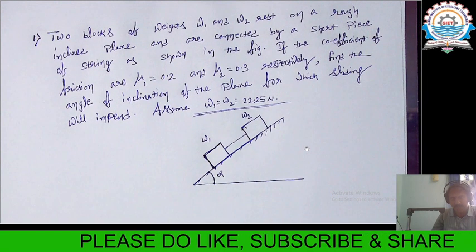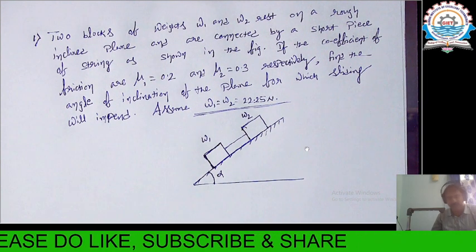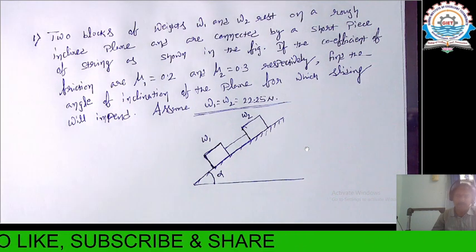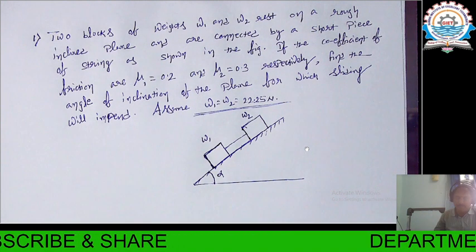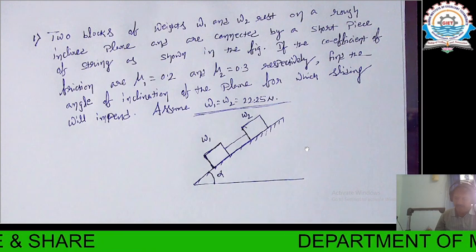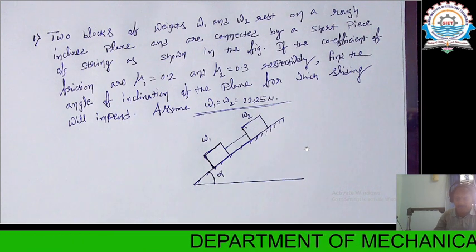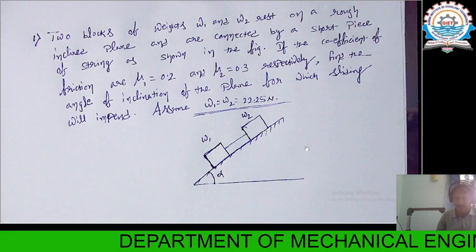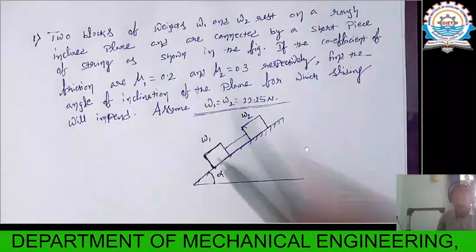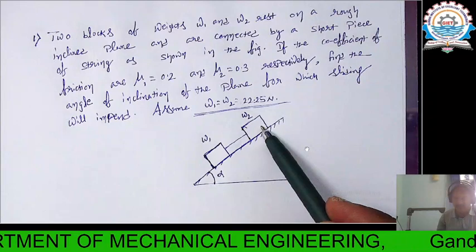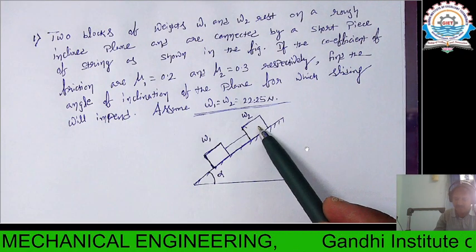Hello everyone, today we are going to do a very important problem on friction. The problem states that there are two blocks, each of weight W1 and W2, which is resting on a rough inclined plane.